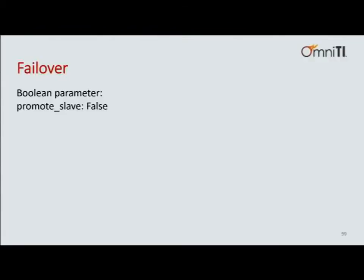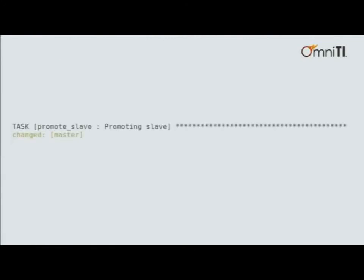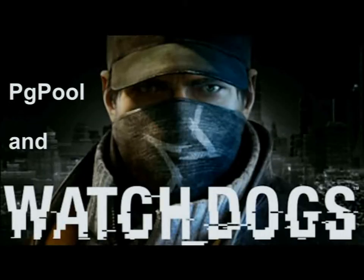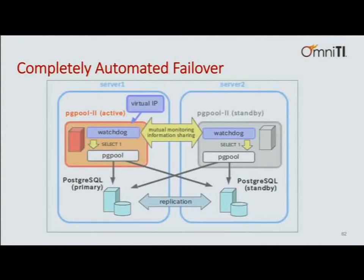Failover — I have a promote slave switch, which is usually false. If it's true, the main YAML file checks for it and runs the failover role, one of the things being promoting the slave. For a completely automated failover, there are several tools and none of them is perfect. One is pgpool and watchdog. There are also a couple of etcd-based tools that provide automated failover, and then there's pgpool.